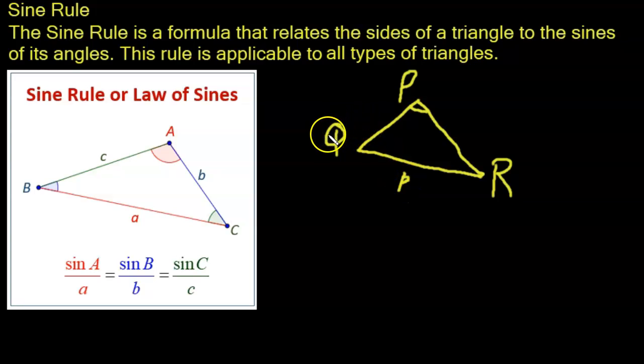If I label this angle capital Q, I label the side opposite to the angle common q. And if I label this angle R, so the angles or the vertices are in capital letters while the sides are labeled in common letters.